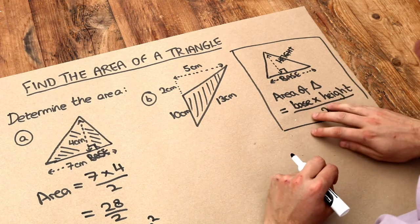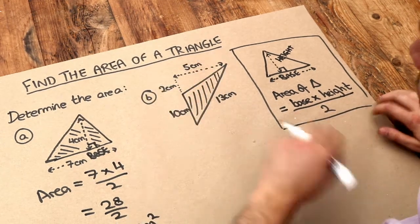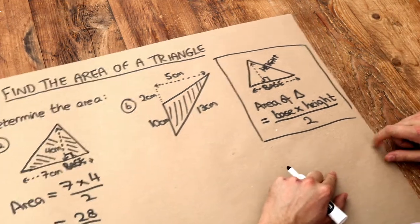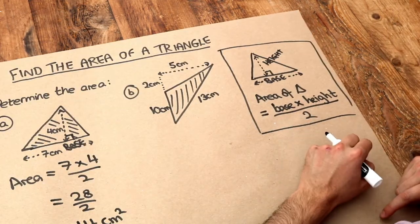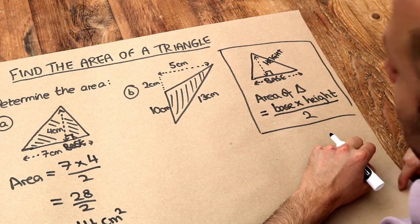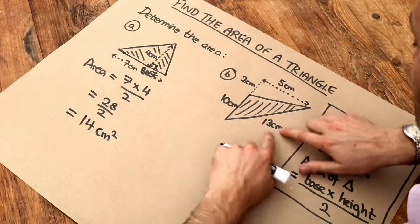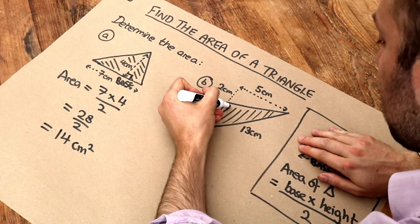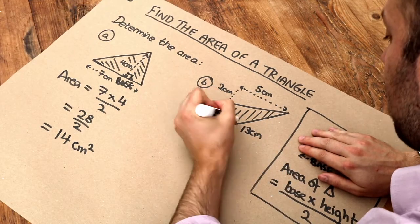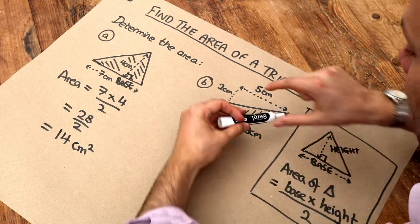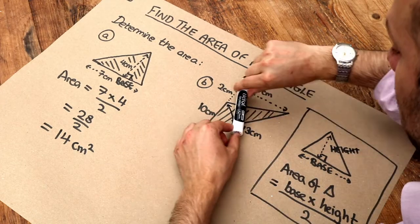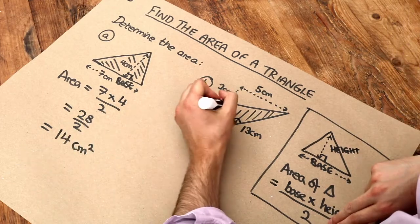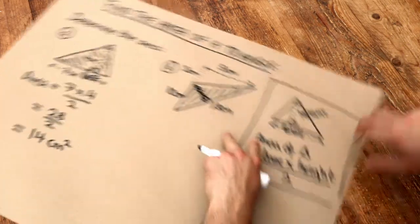Now this second one is a bit more difficult, because there are a lot more lengths here to try and confuse you. But it's still the same principle — we need to identify the base and the height of the triangle. We could use that 13 as the base, but the problem is, if we use 13 as the base, we'd have to work out what the perpendicular height is. We don't know that length, so that's probably not the best choice of base.